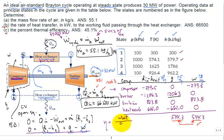And so, we can just say it's 544.3 divided by the 1206.3, and the thermal efficiency of this cycle comes in at 45.1%.